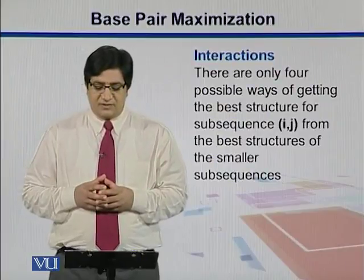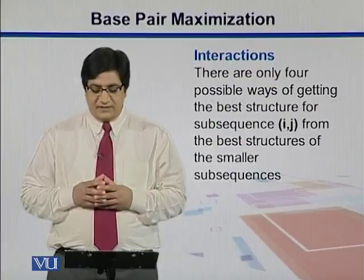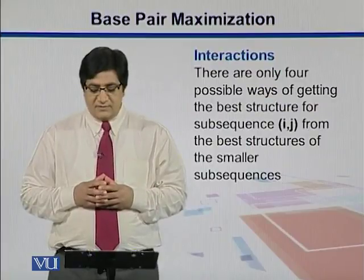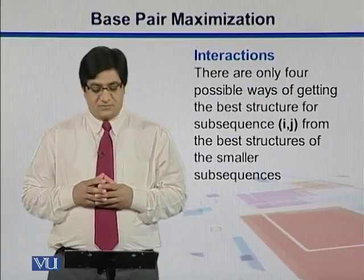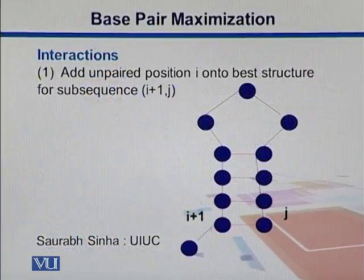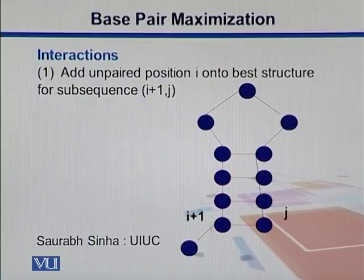There are four possible ways of getting the best structure for subsequences i and j from the best structures of the smaller subsequences. The first case is where we add an unpaired position i onto the best structure for subsequence i+1 and j.